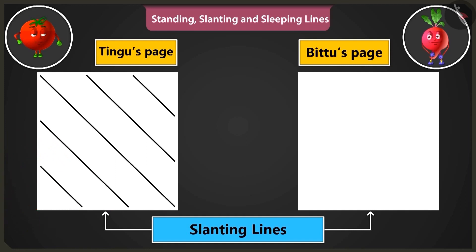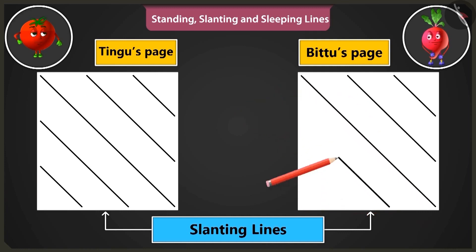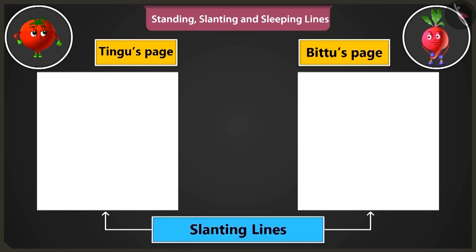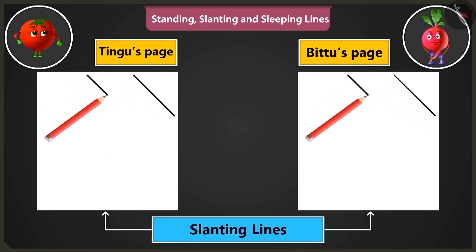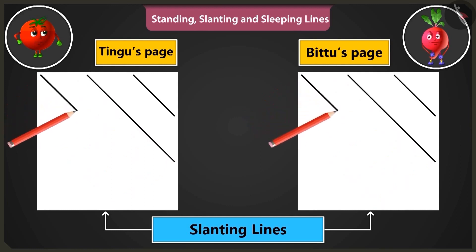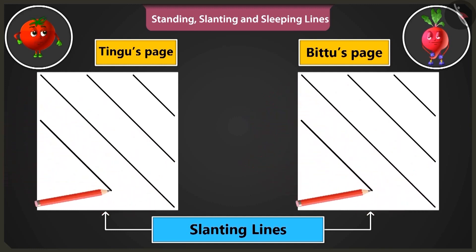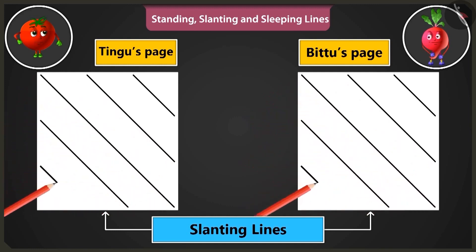See. Okay, I will make it. Very good. Now slanting lines have to be drawn from the right side, top to bottom, just like this. See. Wow, look at my slanting lines.